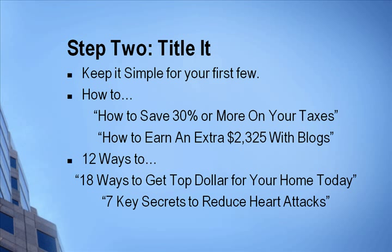Step two: come up with a title. There are a lot of ways, but here are two easy models. The first is 'how to,' such as 'how to save 30% or more on your taxes' or 'how to earn an extra $2,325 with blogs.' Whenever possible, keep it specific — use specific numbers rather than vague phrases like 'how to save more on your taxes.' That's model one: how to blank, solve a problem.